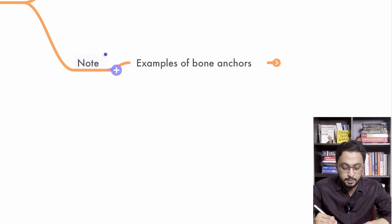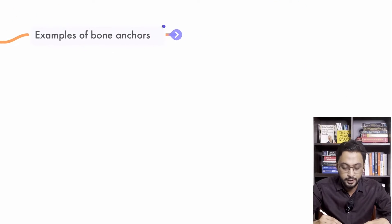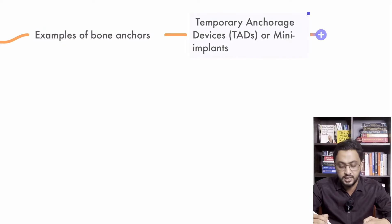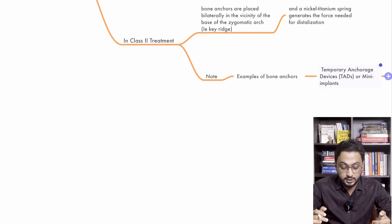And please note examples of bone anchors. One I told you already, which is mini implant. Second is TAD. So many points in 3 minutes. Temporary anchorage device is TAD, or another anchorage device is mini implant to get the force. So that will be the 3 minute series on the Key Ridge.